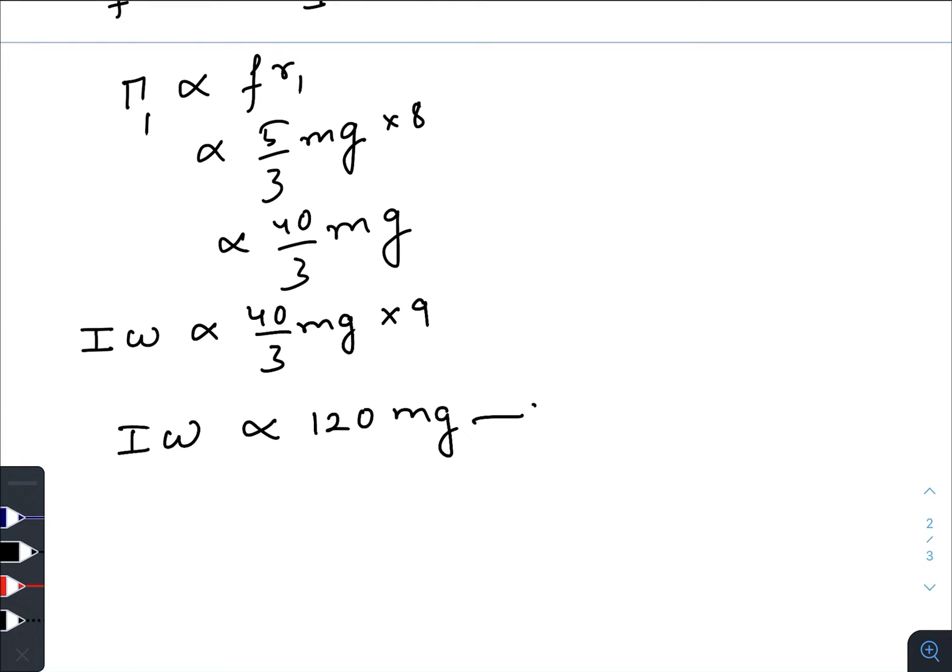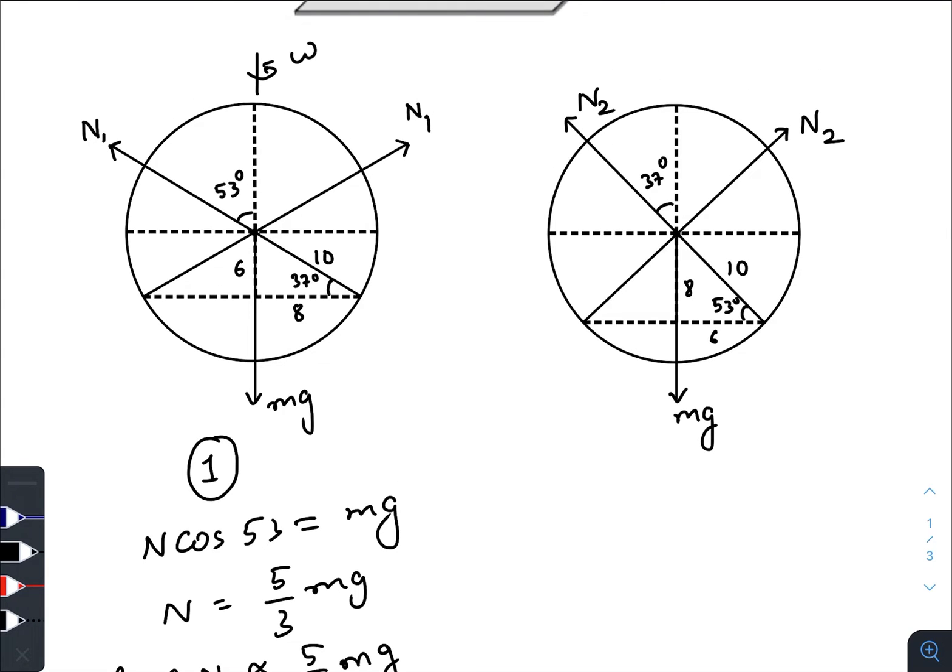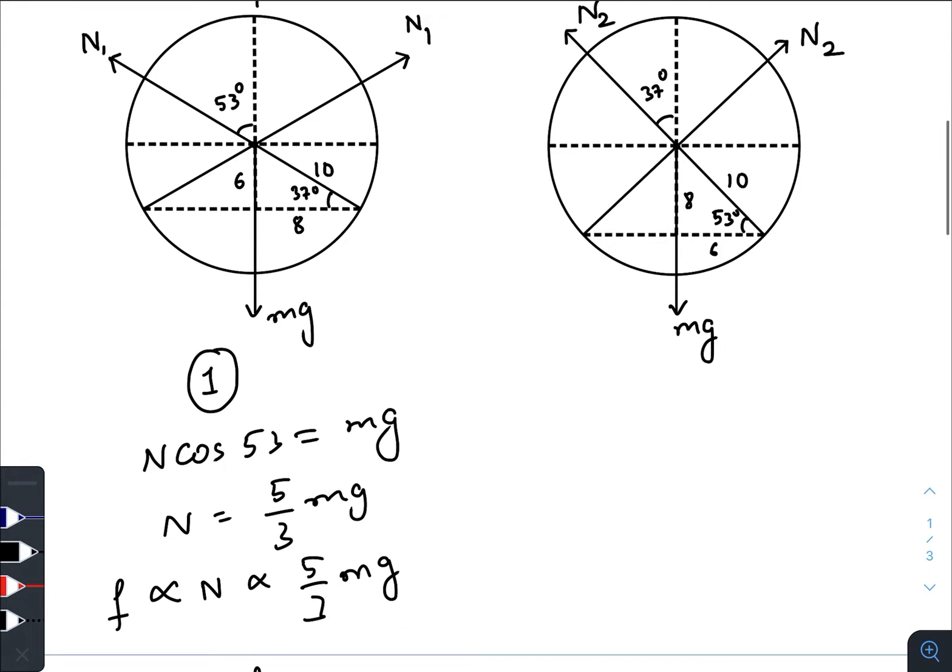So this will be our first working equation. Now let us check the second situation. Here the situation remains the same but the radius of the hole becomes six centimeter. This is eight, so this one will be - sorry, this is ten, this one will be eight. This angle is fifty-three, so this will be thirty-seven.